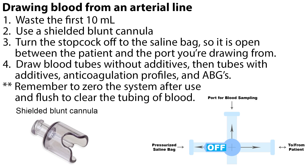When drawing blood from an arterial line, always waste the first 10 milliliters — this blood is hemodiluted and will not give accurate results. Use a shielded blunt cannula. Turn the stopcock off to the saline bag so it is open between the patient and the port you're drawing from. Draw blood tubes without additives first, then tubes with additives, anticoagulation profiles, and ABGs. Remember to zero the system after use and flush with saline to clear the tubing of blood.